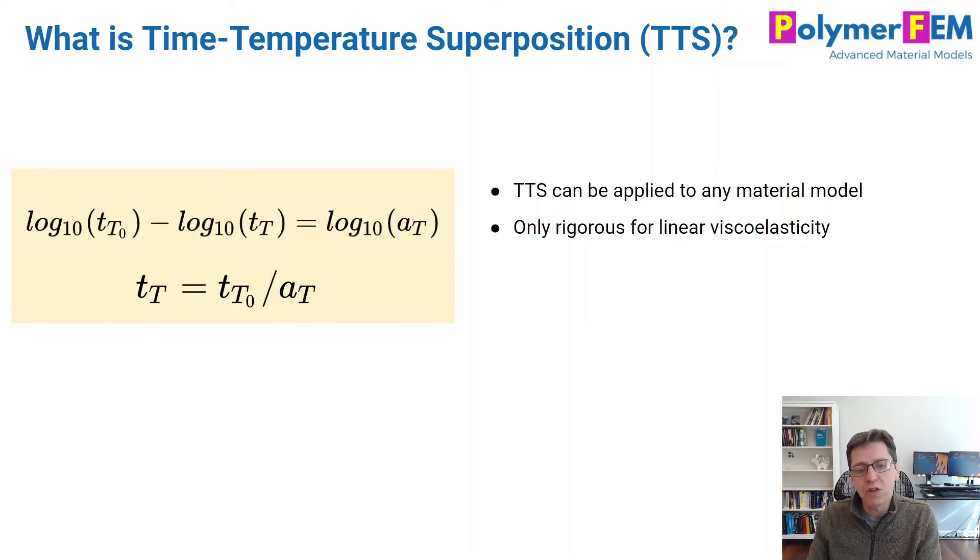And if you shift the relaxation curve, you will shift the Prony series simultaneously indirectly. So this is rigorously true for linear viscoelasticity if the material satisfies this shift factor that you can experimentally examine.